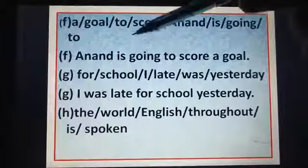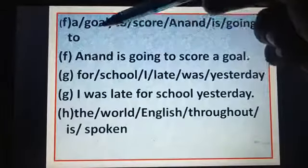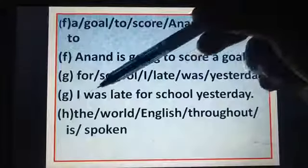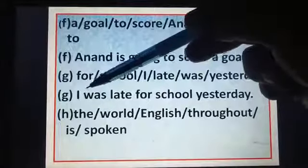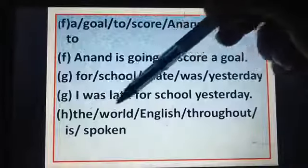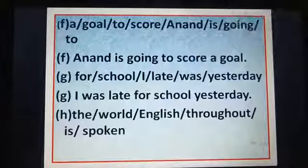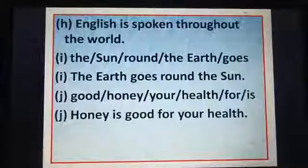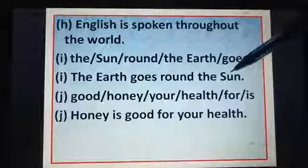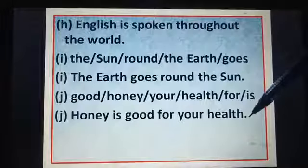Anand is going to score a goal. A will be capital for Anand because it is a proper noun and the first word of the sentence. I was late for school yesterday — I will be capital. Whenever you use I for 'me', it will remain capital. English is spoken throughout the world — E remains capital because English is a proper noun. The earth goes round the sun. Honey is good for your health. All of you have to do these in your book using a pencil.